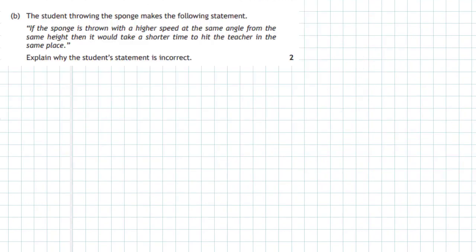Question 1 Part B: the student makes the following statement - 'If the sponge is thrown with a higher speed at the same angle from the same height, then it would take a shorter time to hit the teacher in the same place.' Explain why the student's statement is incorrect. To answer this, we'll go over to the PHET simulation site where they have a projectile simulation - an amazing site to learn about these physics concepts.